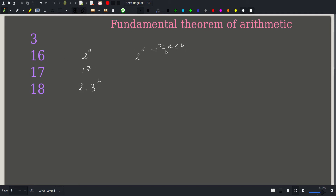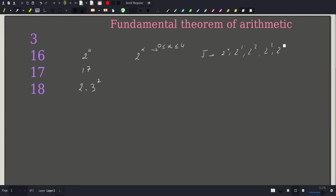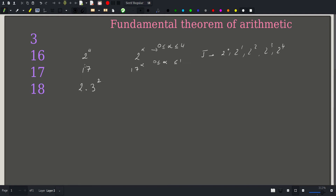So 16 will have 5 divisors: 2 to the 0, 2 to the 1, 2 to the 2nd, 2 to the 3rd, and 2 to the 4th. You won't have any other divisor. The same goes for 17 — all divisors of 17 can only contain 17, and alpha is between 0 and 1, therefore the number of divisors for 17 is just 2, namely 1 and 17.